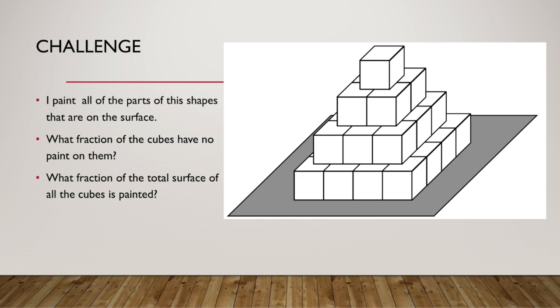As you can see, I've made this shape out of some cubes and what I want you to imagine is that I get this shape, I put it on the table, and then I paint all of the parts of the cubes that are visible from around the table and on top of the table. So I paint all of the faces of the cubes that I can see.